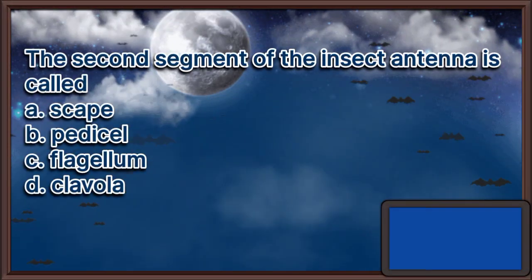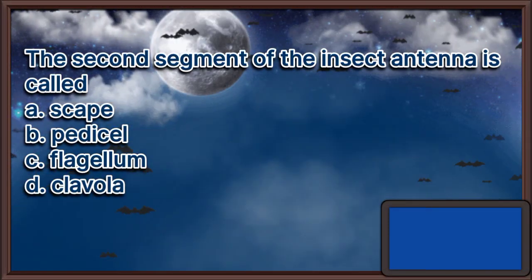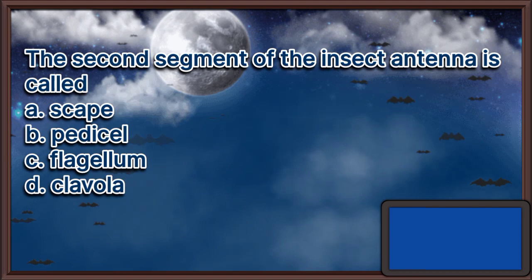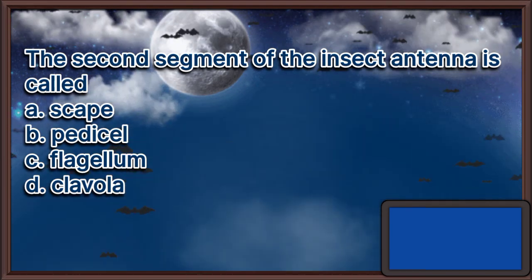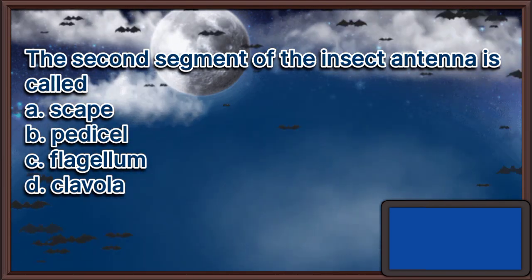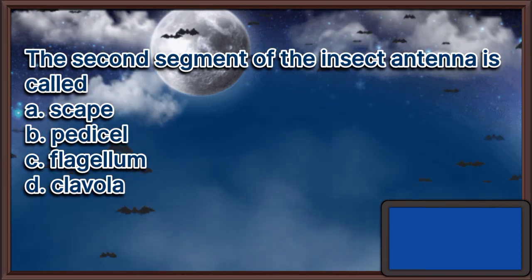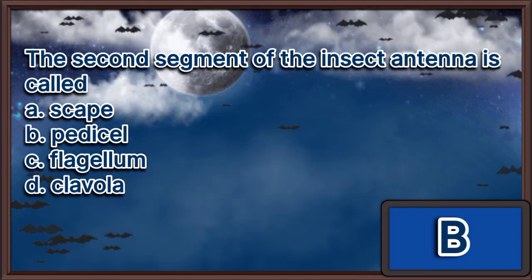The second segment of the insect antenna is called: A. Scape. B. Pedicel. C. Flagellum. D. Clavola. The answer is letter B.